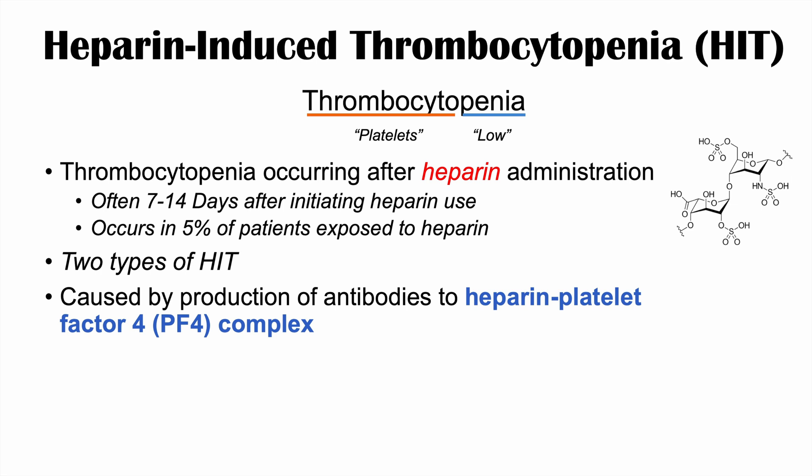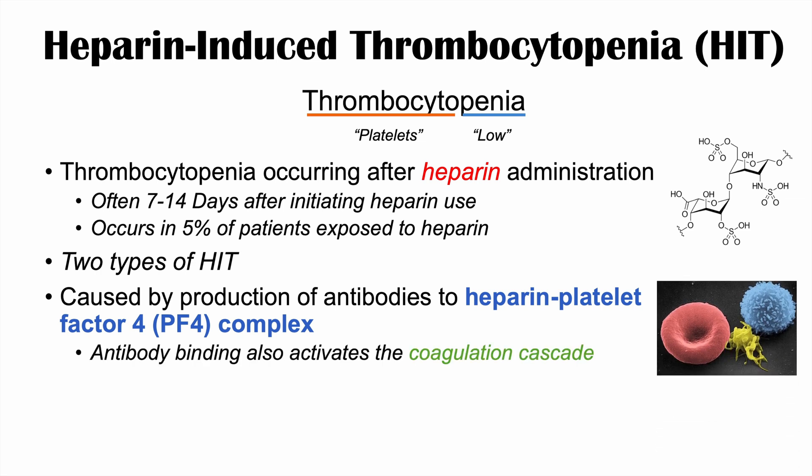The type we'll focus on is caused by production of antibodies to the heparin-platelet factor IV, or PF4, complex. What we find when this happens is that that antibody binding causes activation of the coagulation cascade, which can cause many other problems we'll discuss.